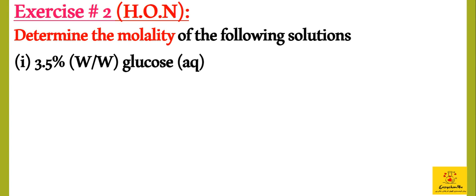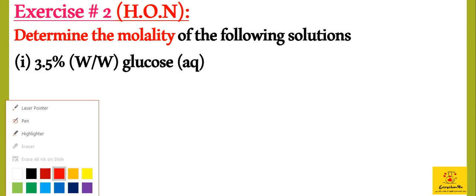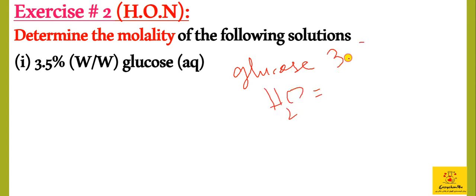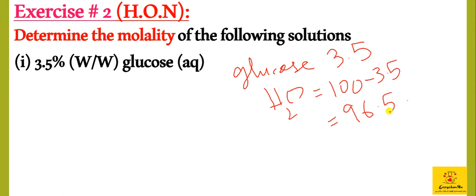Exercise question number 2 is a high order numerical. We have to determine the molality of 3.5% weight by weight glucose solution. First, from weight by weight percent, extract information: glucose weight is 3.5 grams, and water weight is 100 minus 3.5 equals 96.5 grams.